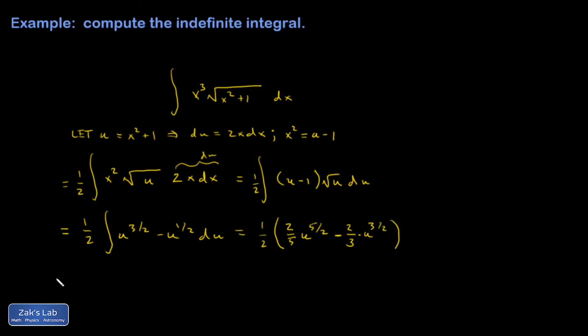And there will be a plus c there, but I'm not going to bother until I state my final answer. I could divide a two out of the interior and then cancel it with the two in the denominator out in front. So I end up with one fifth u to the five halves minus one third u to the three halves.